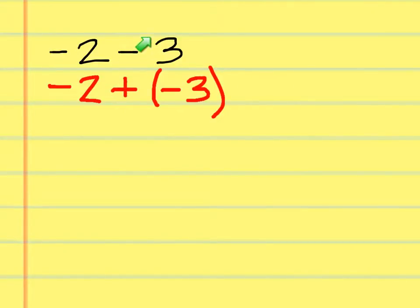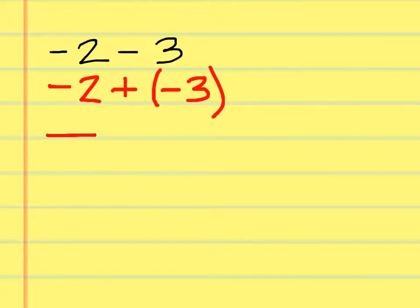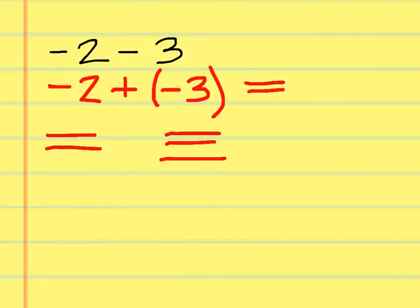You can trade out a negative sign for a plus a negative. Now you're right back to the addition rules. I have two negative signs and then three negative signs. How many negative signs do I have? I have 5, so negative 5 is the answer.